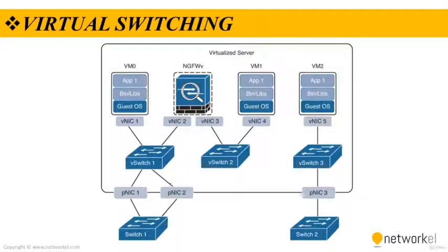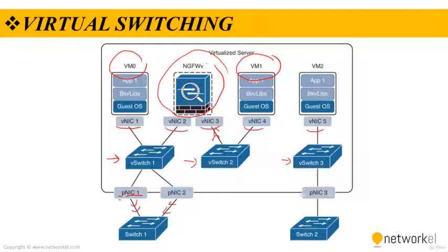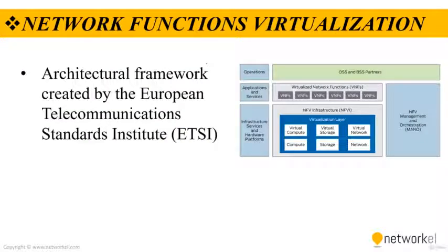On the screen, you can see a figure which illustrates a virtualized server with three vSwitches connected to the virtual network interface cards (vNICs) of the VMs as well as the PNICs. We have vSwitch 1, vSwitch 2, and vSwitch 3 connected to the VMs via vNIC interfaces, and also connected to the physical switches via PNIC interfaces. Since network traffic cannot flow from one vSwitch to another, traffic coming from VM1 and destined to VM0 should flow through the next generation firewall shown here.